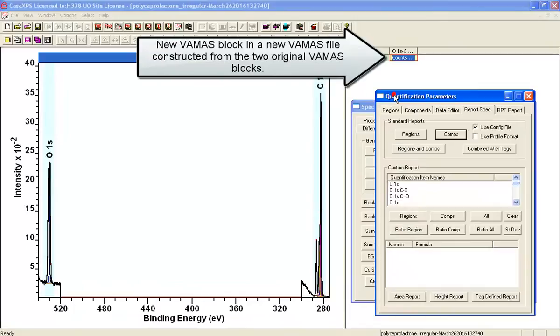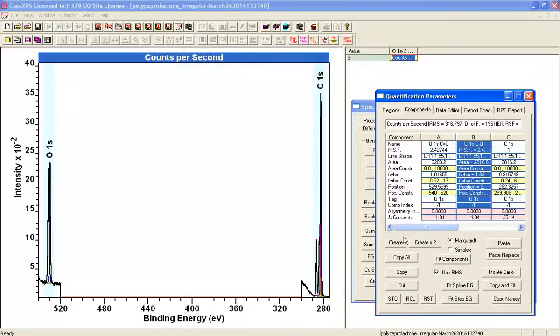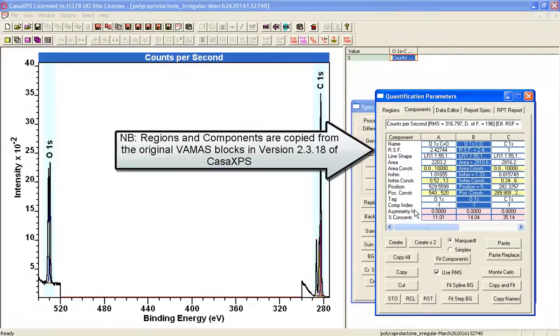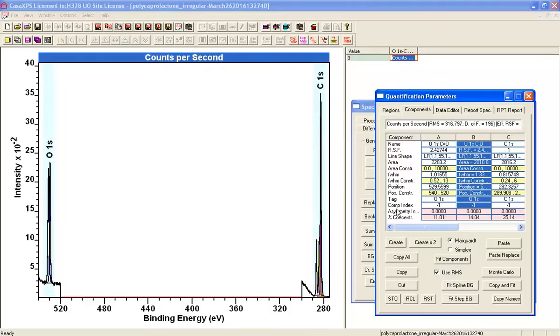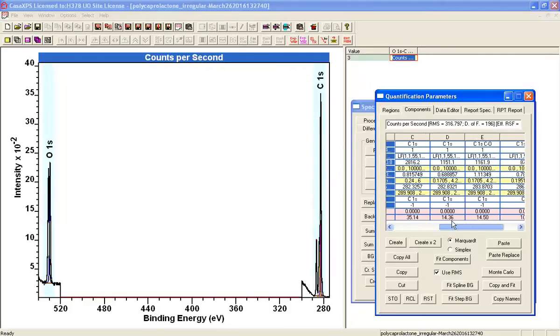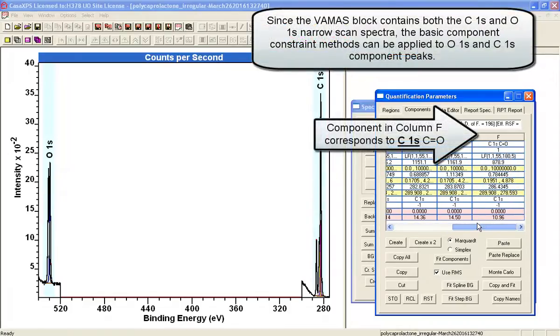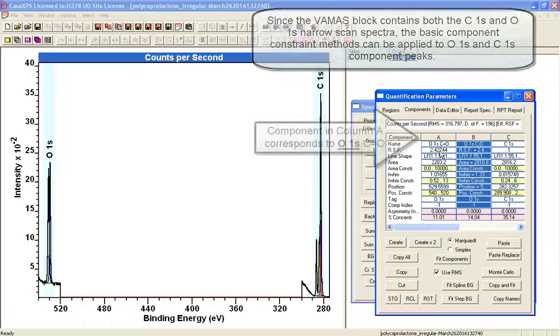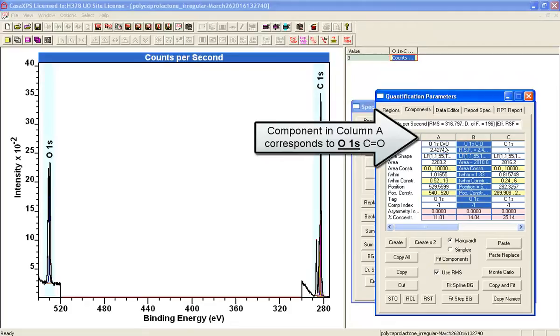Now when I look at the components property page I've got all of these components that I previously set up and I can now test the relationships quite nicely. In column F I've got C1S C double bond O and in column A I have the oxygen corresponding to that.